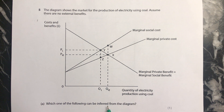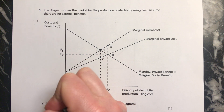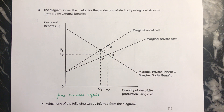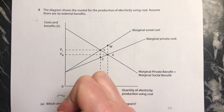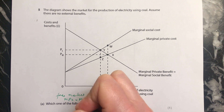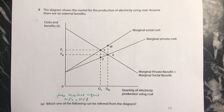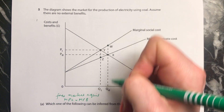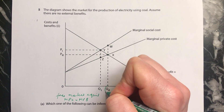They want to know which of these we can infer from the diagram. Before we even look at the possible answers, let's establish the free market equilibrium. That occurs where marginal private cost equals marginal private benefit. So marginal private cost equals marginal private benefit here, and following it down, this quantity is the free market level of output.